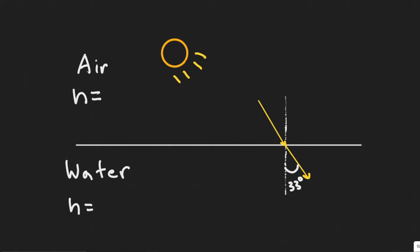In this problem, we're told rays of the sun are seen to make a 33 degree angle to the vertical beneath the water. At what angle above the horizon is the sun?